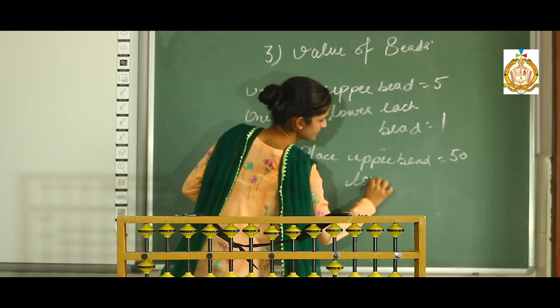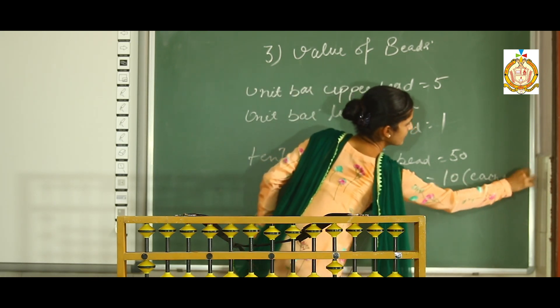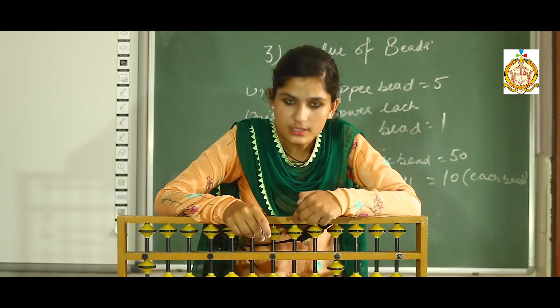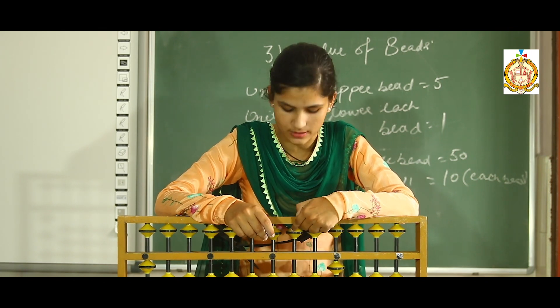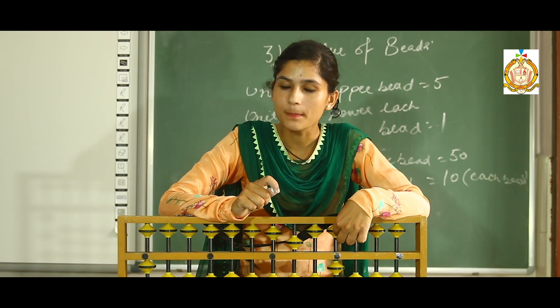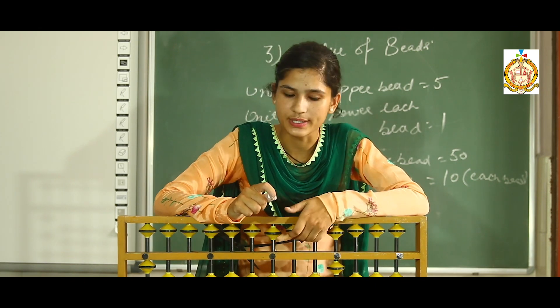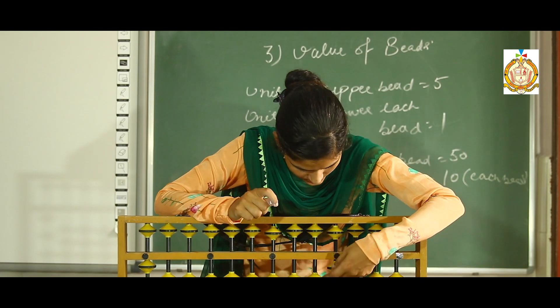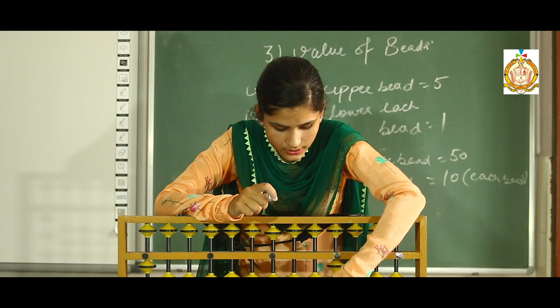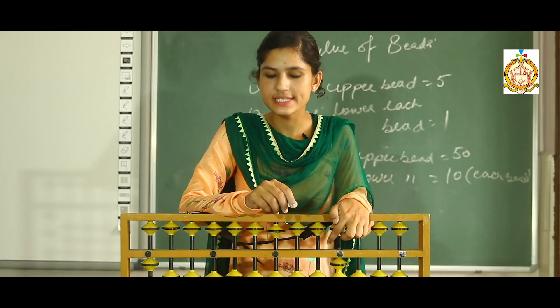After the tens place, the hundreds place comes. The hundreds place upper bead value is 500, and each hundreds place lower bead value is 100. So the pattern is: unit place lower beads all together give 4; tens place lower beads give 40; hundreds place lower beads give 400. Unit dots indicate place values — unit, then tens, then hundreds.